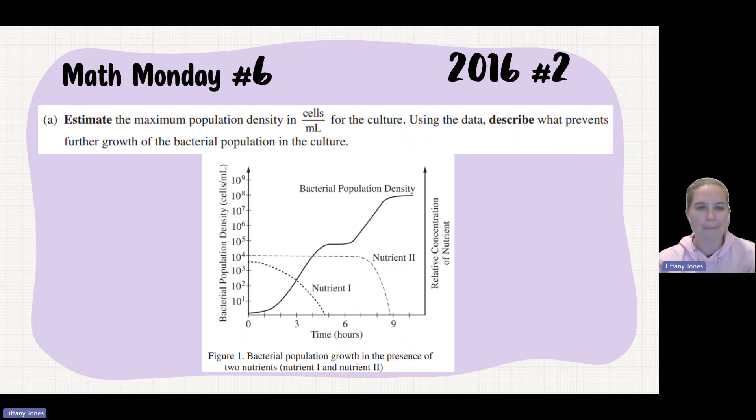So the first part isn't actually doing any type of math. But I did want to point out how there could be a numeric response in terms of one of your FRQs. So estimate the maximum population density in cells per milliliter for the culture. So if we look at our graph, we can see where is the highest point that that population density was. And it's right here we take our dotted line over. And it's 10 to the 8th. And that's how many our population density is. And, of course, I would write that as complete sentence.